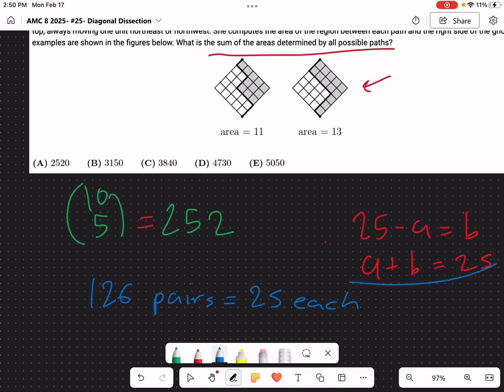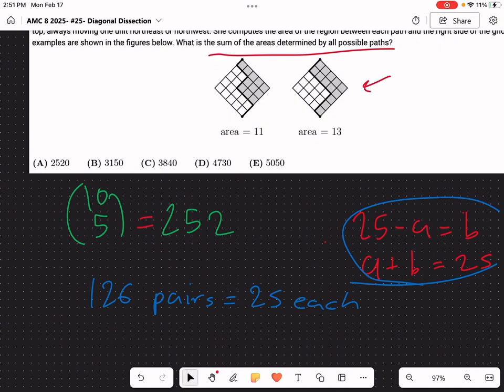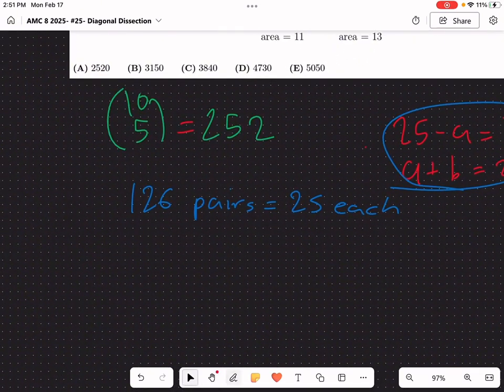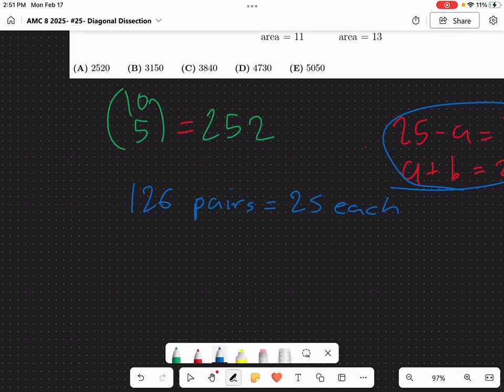So in reality we have 126 pairs, pairs that always equal 25 each because of this path, this inverse path ratio thing. So now we just have to multiply 126 by 25, right? You have 126 pairs that equal 25 each.